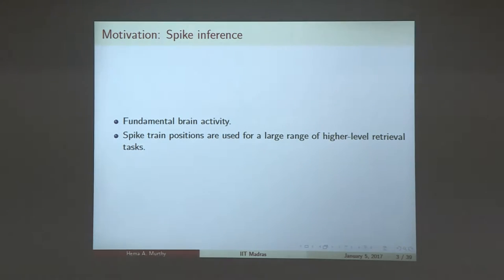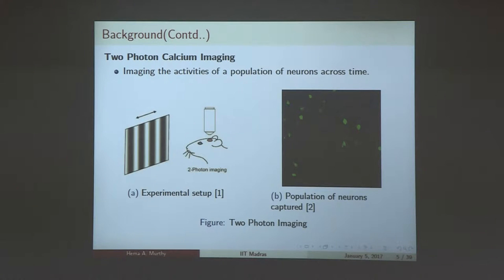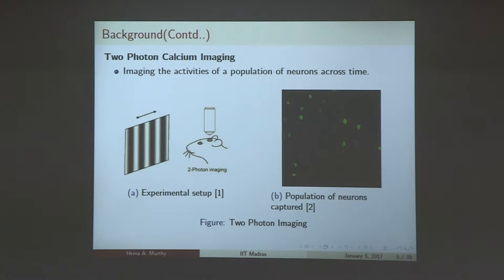The motivation for spike train inference is primarily that it's a fundamental brain activity. Spike train positions are used for a large range of high-level retrieval tasks. Generally, you have an electrode, a microelectrode that sits on the neuron and picks up the action potentials. An alternative to this is two-photon imaging, which is non-invasive. What you see on the right-hand side is neurons which are lit up, and we're looking at similar neurons and the corresponding spike train. Can we infer the spike train from these calcium traces? There is the fluorescence of the neuron when it fires, when it's injected with a calcium indicator. Can we infer the spike train?